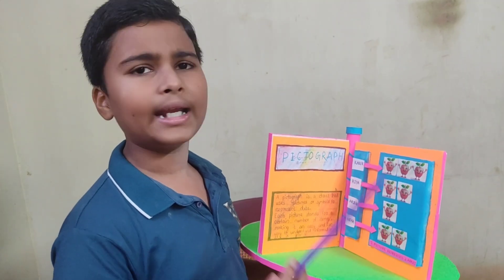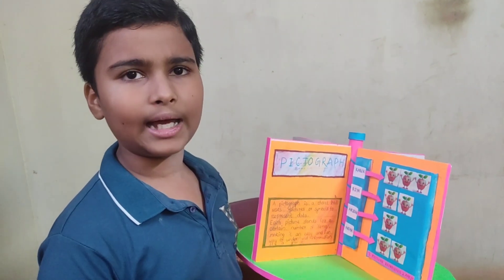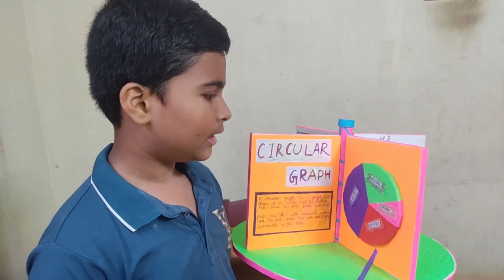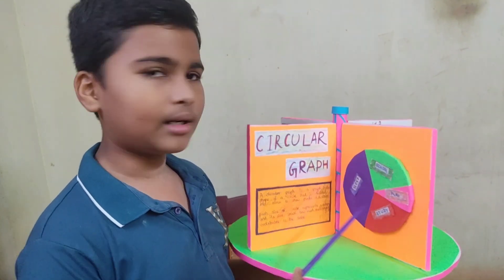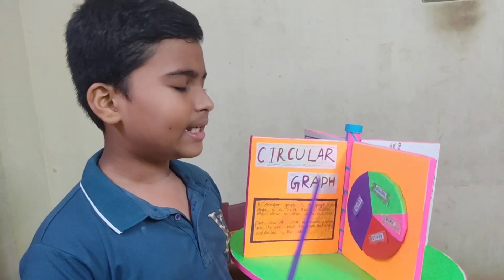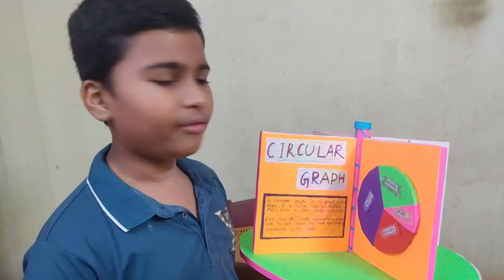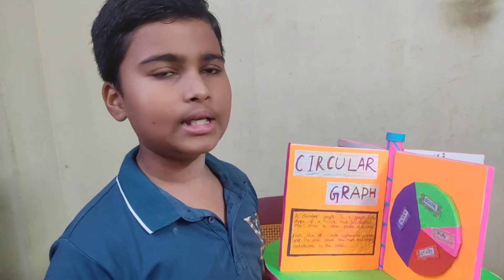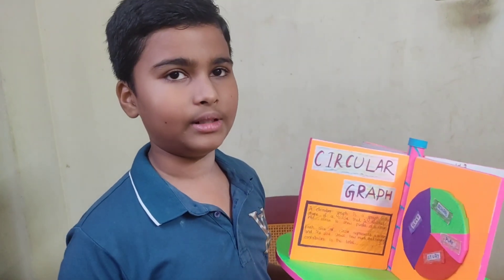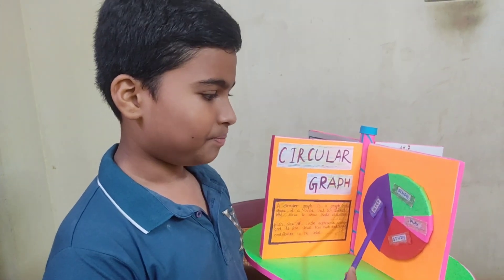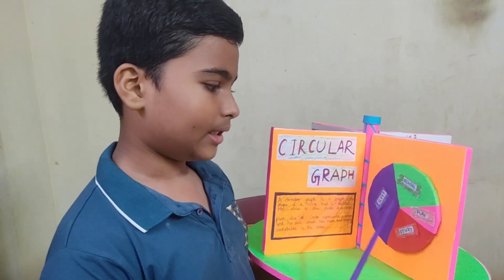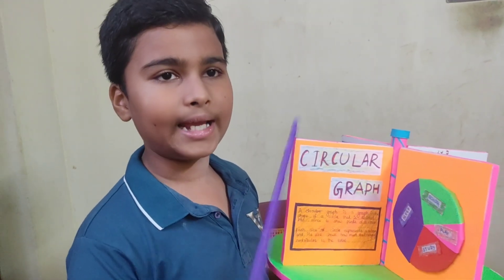It is a very fun and encouraging way to represent data, especially for young learners. And let's finally talk about the circular graph, also known as a pie chart. It uses a circle that is divided into parts. For example, if I make a circular graph of my daily activities — one day equals 24 hours — I give eight hours for sleep, six hours for school, six hours for study, and four hours for playing. The largest part represents sleep, that is eight hours.